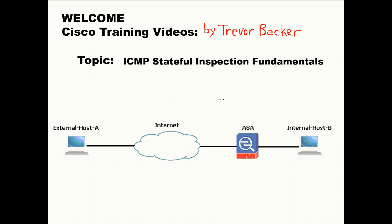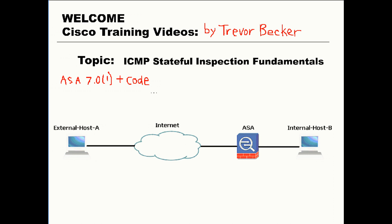Since ICMP is a connectionless protocol, ICMP has the ability to send one host a message and never even expect a reply. Because the ICMP protocol operates with such loose rules, the firewall cannot track the state of different ICMP traffic between hosts.